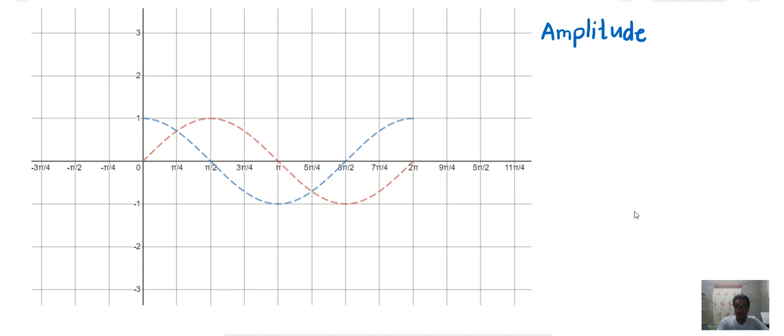So, the amplitude is equal to the absolute value of A. If we have the function f(x) equals A times sine x or cosine x, if there's a constant multiplied to the function, then the amplitude is the absolute value of that constant A.